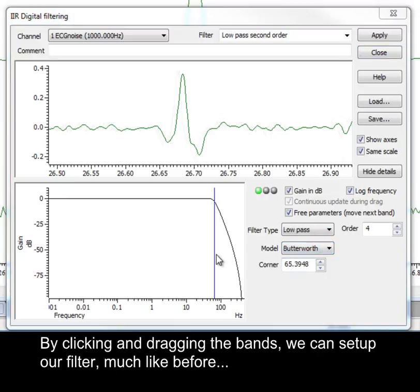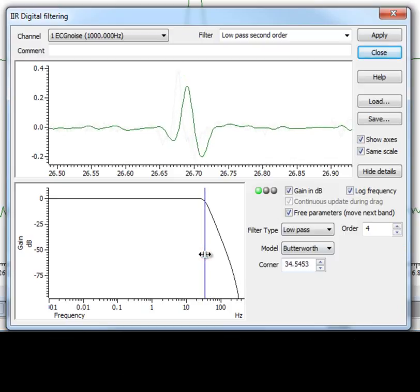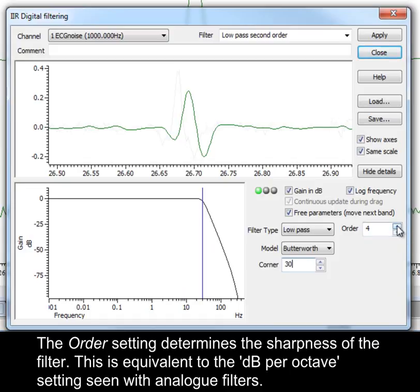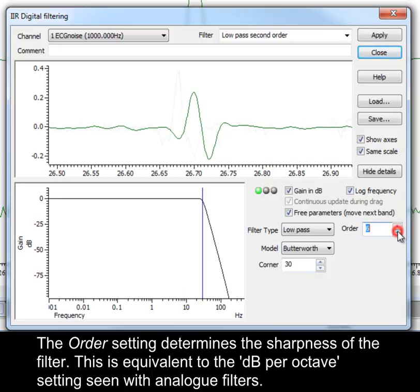By clicking and dragging the bands, we can set up our filter much like before. Or edit the corner frequency directly. The order setting determines the sharpness of the filter. This is equivalent to the dB per octave setting seen with analog filters.